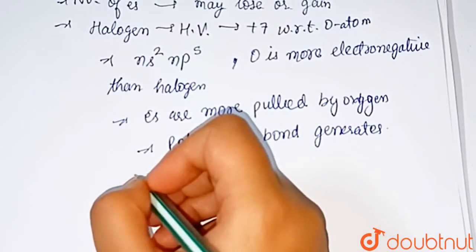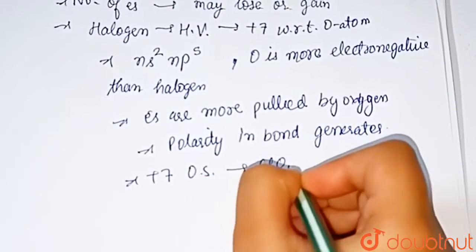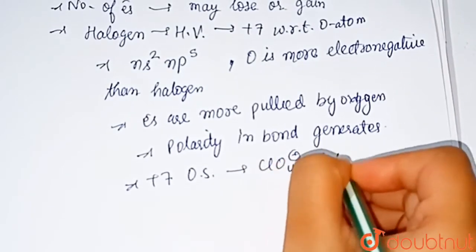So examples of plus seven oxidation state of halogen are ClO4 minus, BrO4 minus, and so on.